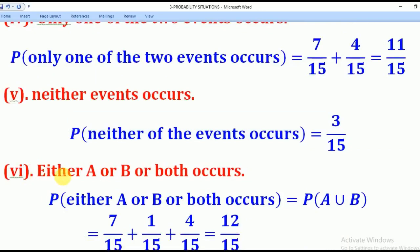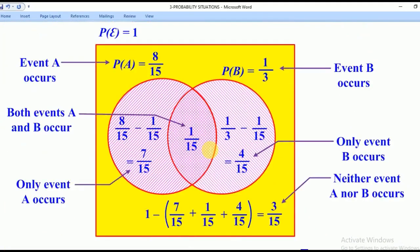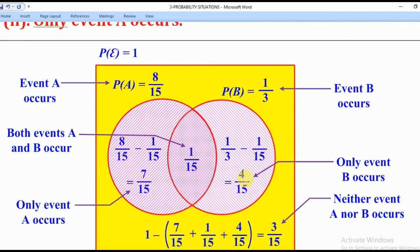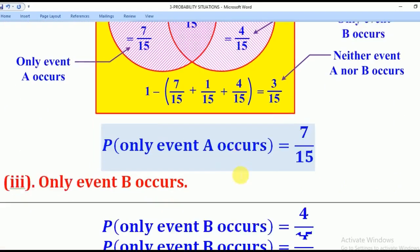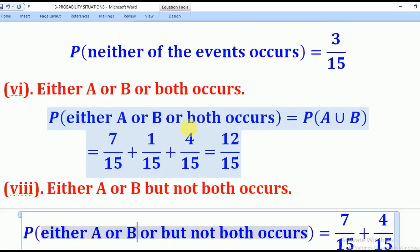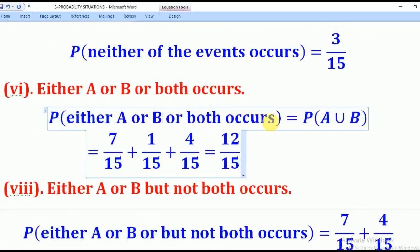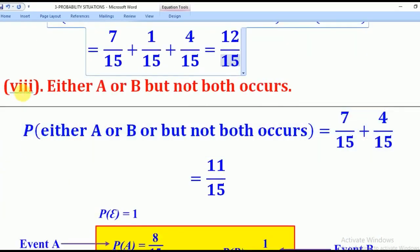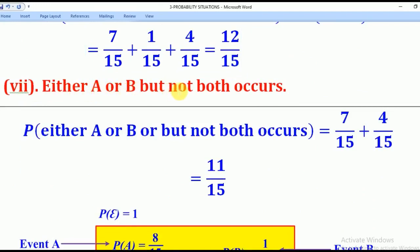For the Probability that either A or B or both occurs, remember that this phrase represents the union. So the Probability equals 7 over 15 plus 1 over 15 plus 4 over 15, giving an answer of 12 over 15.